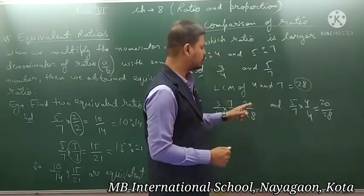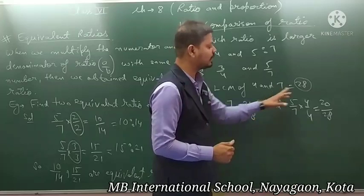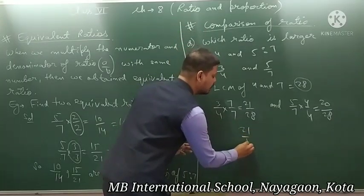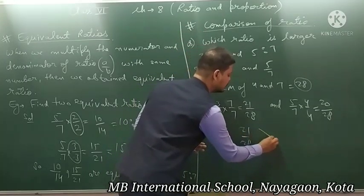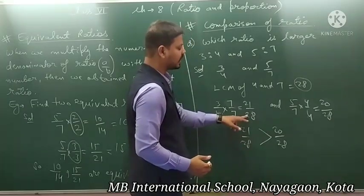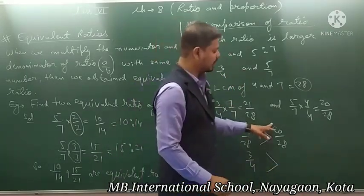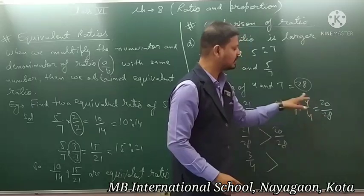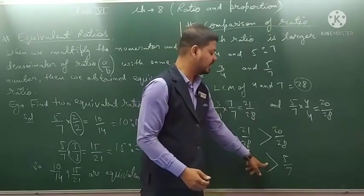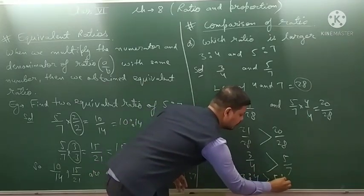Ab aap dekhenge dono jo equivalent ratios nikale hain unka denominator 28 ho gaya hai — it means ab aap inko easily compare kar sakte ho. Ek hai 21 upon 28, aur doosra hai 20 upon 28. 21 greater hai ki 20 greater hai — aap dekhein 21 is greater than 20. To 21 upon 28 is greater than 20 upon 28. Aur 21 upon 28 kiska equivalent ratio hai — 3 upon 4 ka. Aur 20 upon 28 kiska equivalent ratio hai — 5 upon 7 ka. Means 3 upon 4 ratio is greater than 5 upon 7. So 3 ratio 4 is greater than 5 ratio 7.